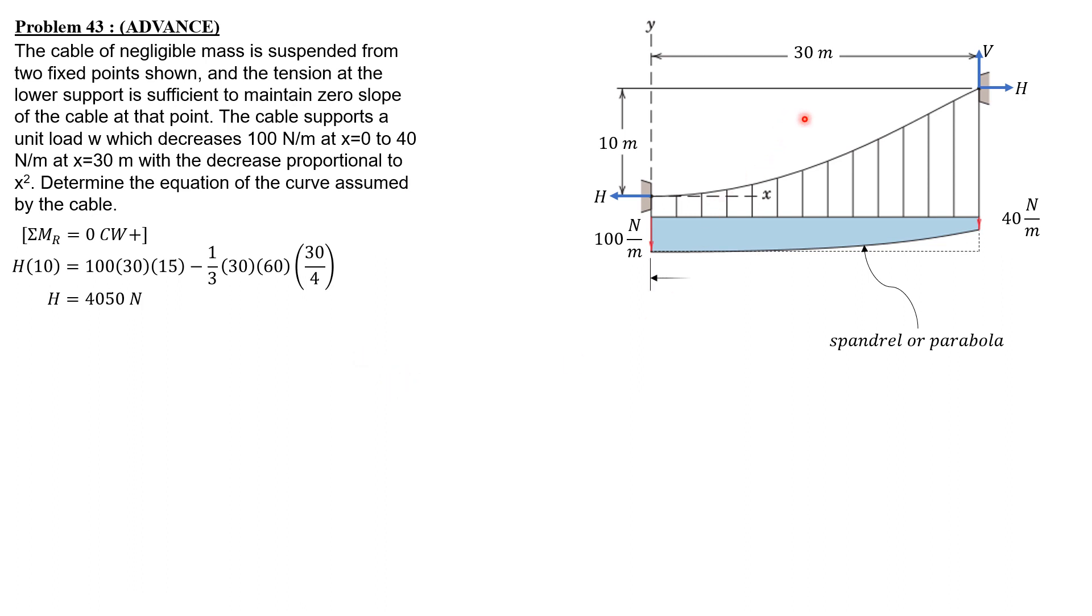Then we consider a section here at distance x, and the vertical distance from the lowest point to the cable as y. We sum up moment about that point, let's call it point P. So let's consider from origin to P and the loading. We will call this load W, this small value here. So it is still rectangle minus the spandrel.